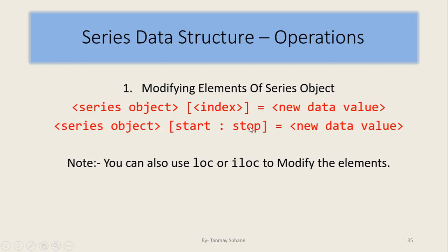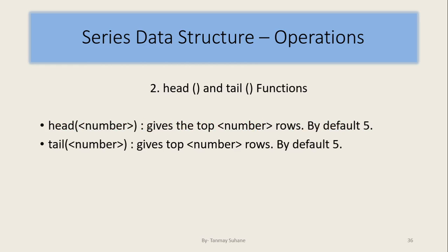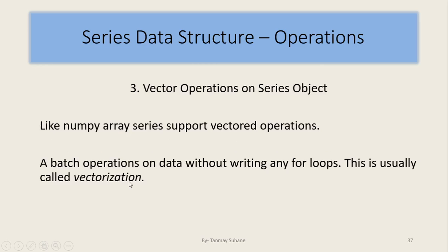We will see these practically after a while. The second thing we will discuss is head and tail functions. Using head, I can find the top rows from the series. Using tail, I can find the bottom rows from the series. By default, it will give 5 rows. I can provide numbers to find the required number of head or tail values.